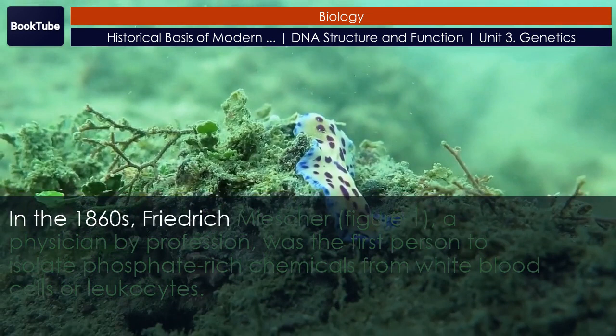The S strain is pathogenic, or disease-causing, and has a capsule outside its cell wall. As a result, it has a smooth appearance under the microscope.